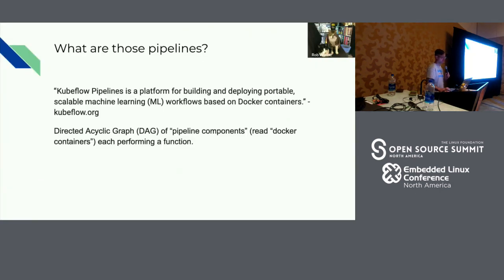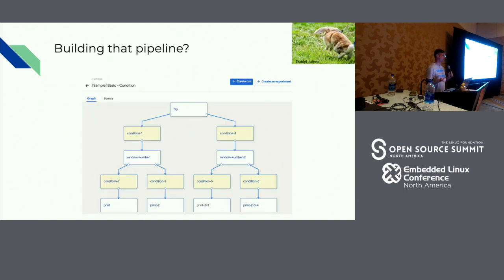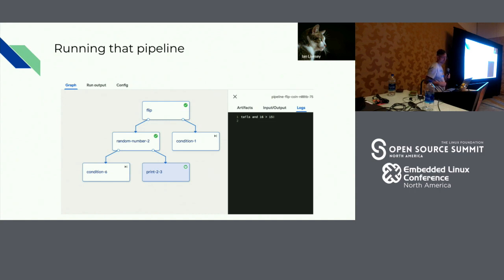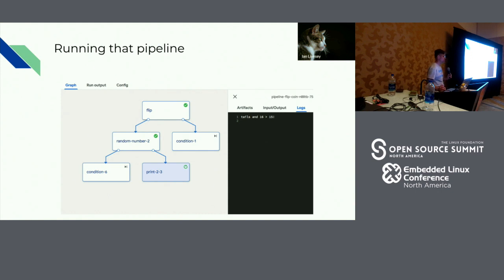Pipelines. You have this directed analytic graph — here's an example that comes with Kubeflow. Imagine you flip a coin, it's heads or tails, you get a random number, and then it does a thing and prints output. The idea is that if you're going to run a million experiments, you need to know what hyperparameters you're tuning. You might be tuning the alpha on one of your sklearn models, but if you're trying 12 different models with different hyperparameters and different combinations of input data, this is how you build it.